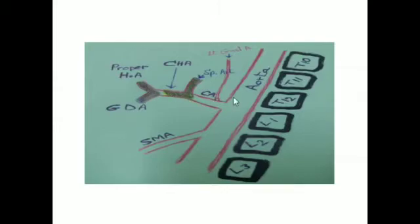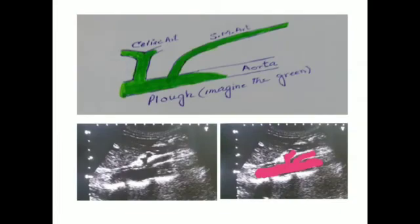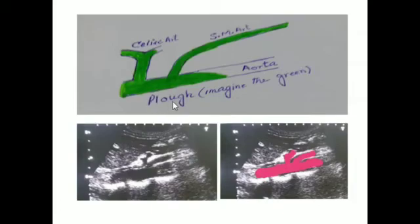The second branch of the aorta is the superior mesenteric artery, which originates anteriorly from the aorta. In this image, this is the aorta, this is the celiac artery originating from the aorta, and the second branch anteriorly is the superior mesenteric artery. It shows like a flow — imagine the green section of this portion. This is the aorta, this is the SMA, and this is the celiac artery.